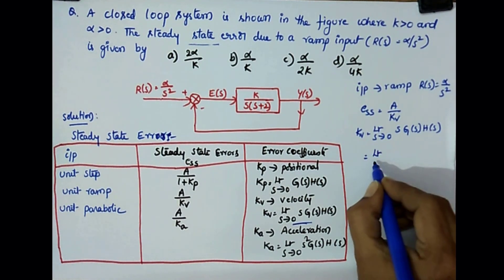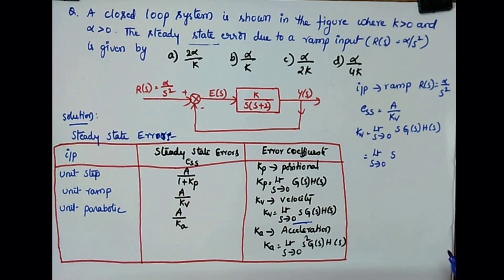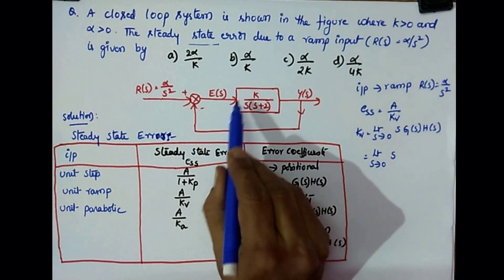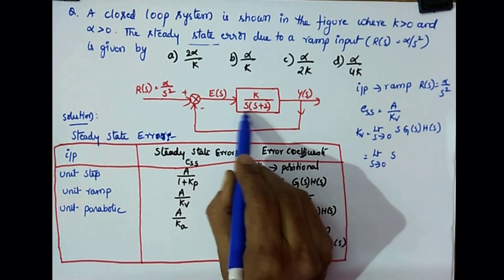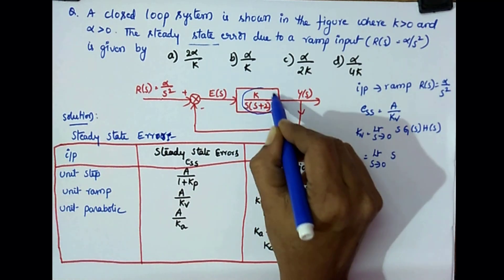Then limit S tends to 0. What is G(s) here? G(s) is nothing but your K by S into S plus 2. So this is your G(s).